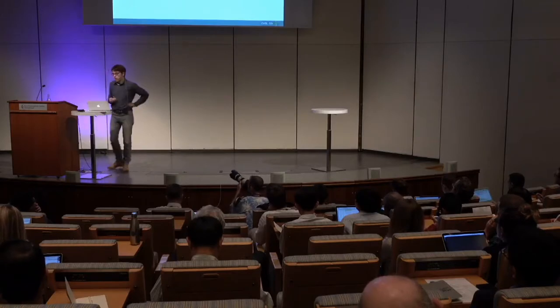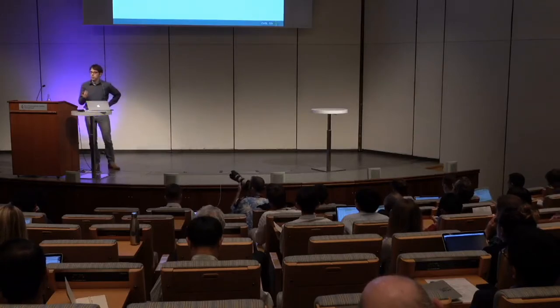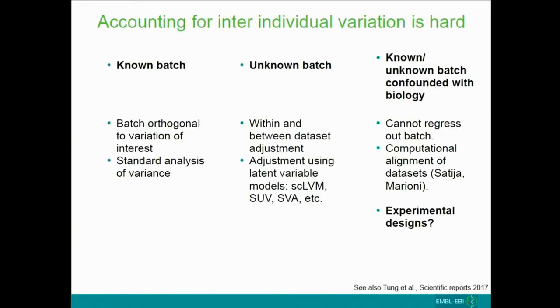The first example I want to talk about is inter-individual variation and batch - a question that's very close to my heart, but really a general phenomenon we have to address. It also ties human cell atlases with human genetic variation and other efforts. I want to start with three categorizations of what I mean by batch. I believe there are three different types of batch. On the one hand, there's the simple batch we all know about.